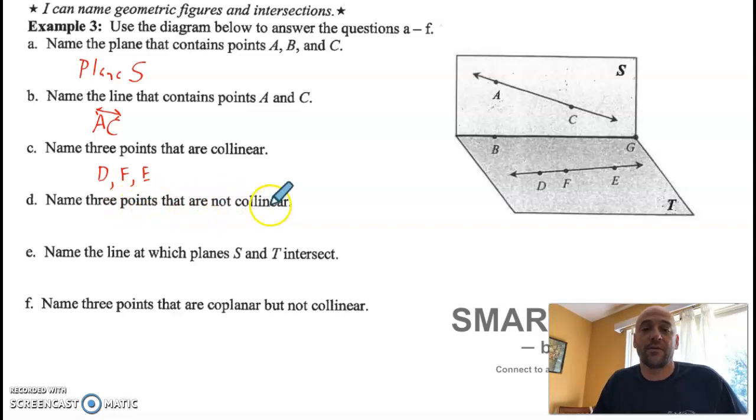Name three points that are not collinear. You've got a ton of answers. Basically, you can choose any set of three points as long as they're not D, F, and E. All other combinations of three points, they're not going to be on the same line. You just can't choose D, F, and E. Choose D, F, and any one of A, B, C, or G. It doesn't matter.